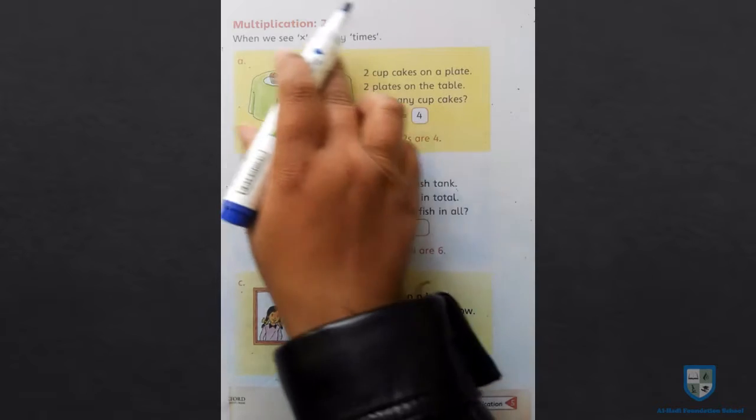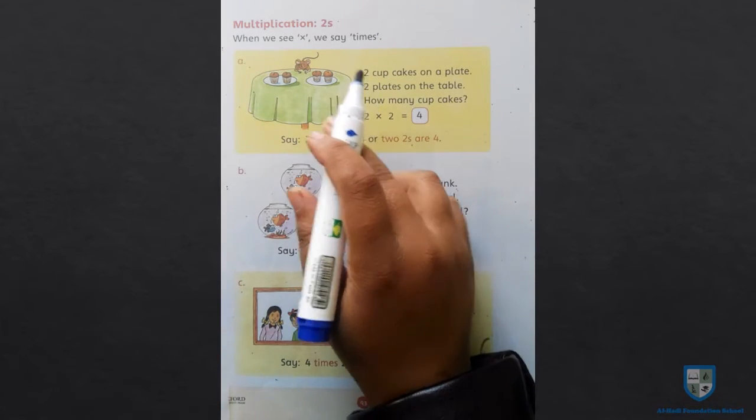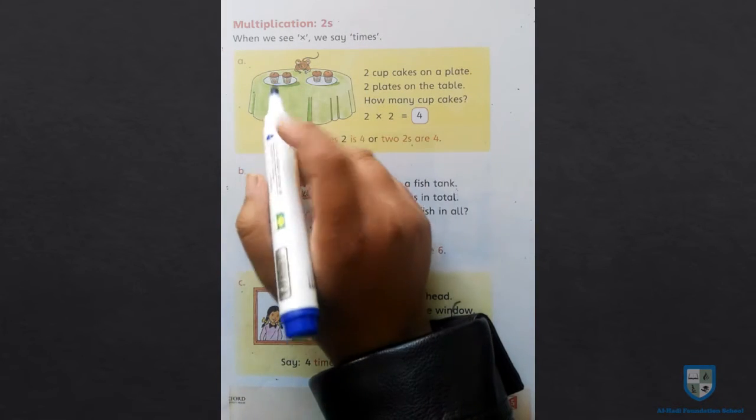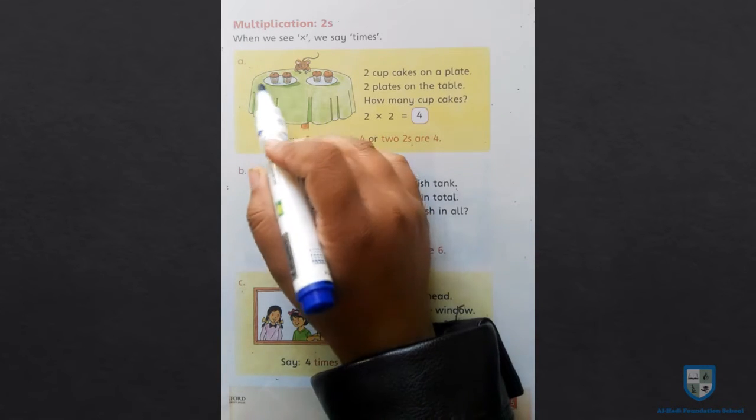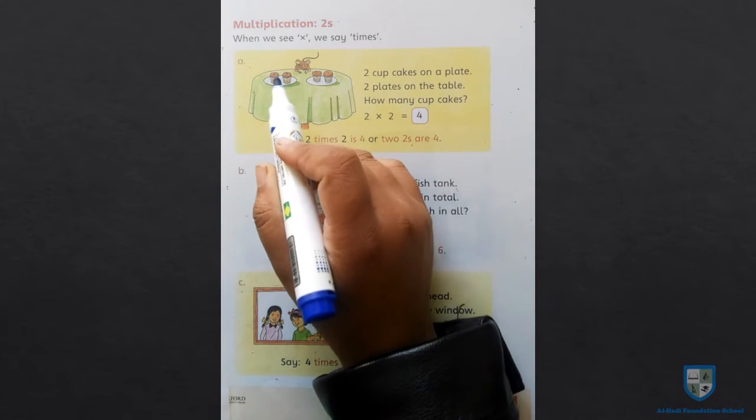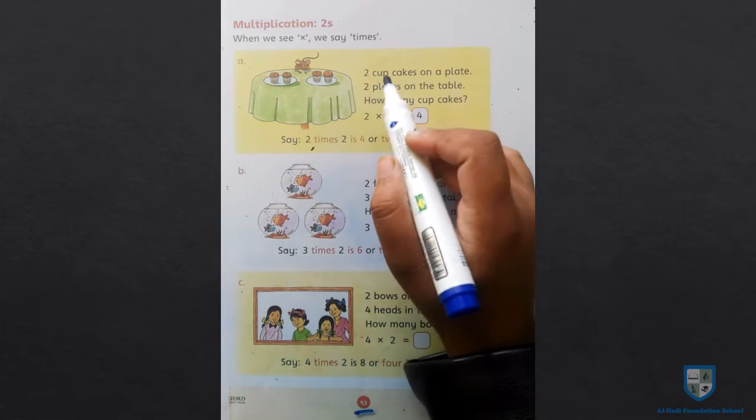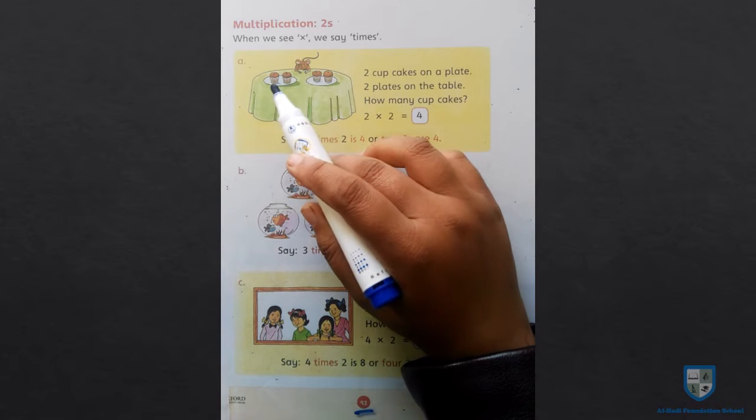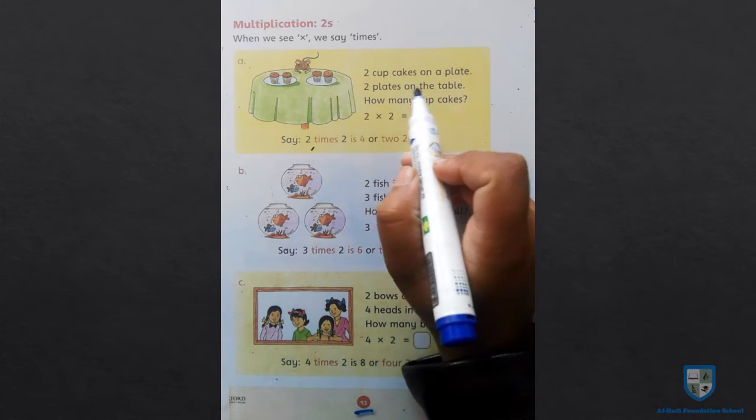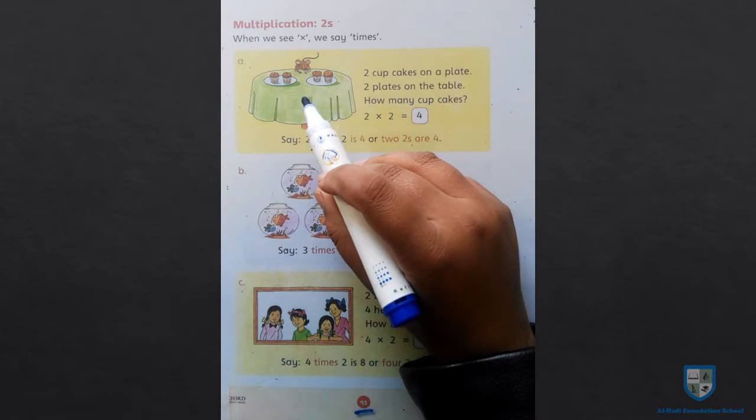First of all, you have a picture of a table. There are 2 plates, and in each plate there are 2 cupcakes. Total 4 cupcakes and 2 plates. 2 cupcakes on a plate, 2 cupcakes on a plate, and 2 plates on the table.